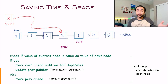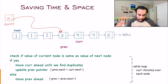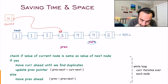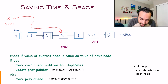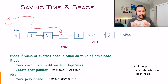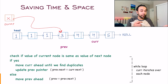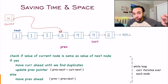Once again, do the same approach: is the current value the same as the next value? Yes. So you want to find out how many duplicates you have. You move your current pointer one step ahead and check: is the current value the same as the next value? No — that means you have found out all of your duplicates. It is time to update the previous value. And again, previous.next equals to current.next.